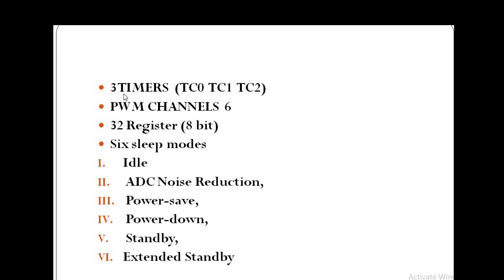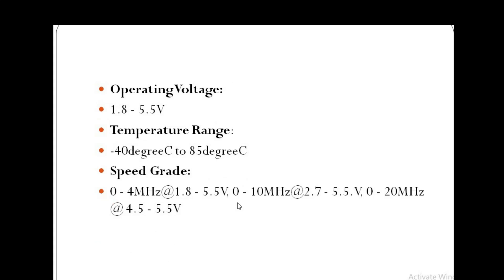The ATmega328P has three timers and six PWM channels — PWM means Pulse Width Modulation. It has 32 registers, each 8-bit. There are six sleep modes in the ATmega328P: idle, ADC noise reduction, power save, power down, standby, and extended standby.